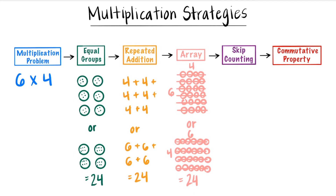Another way to find out six times four is to skip count by six four times: six, 12, 18, and 24. So we know the product is 24.